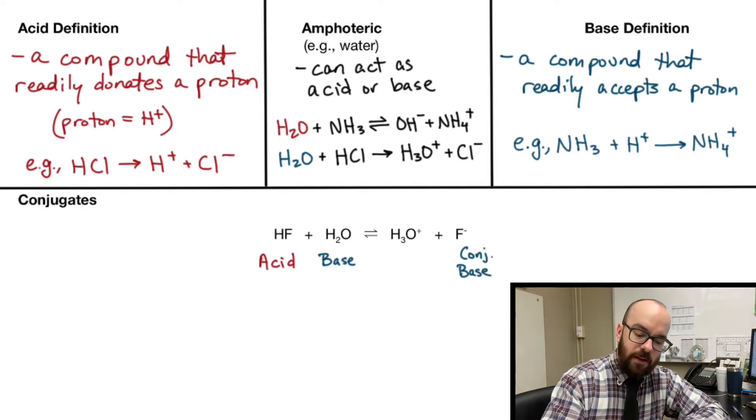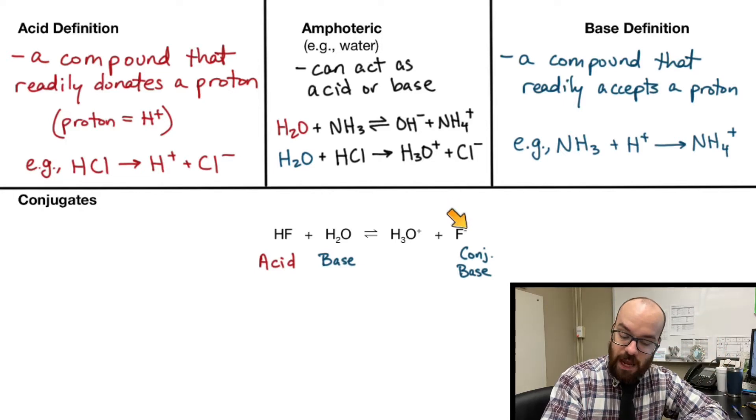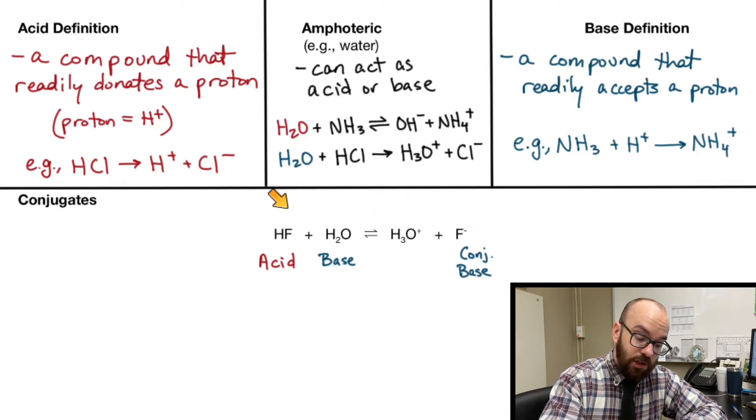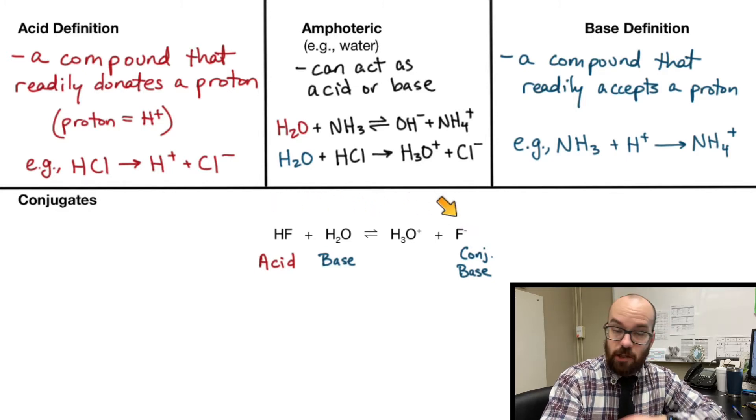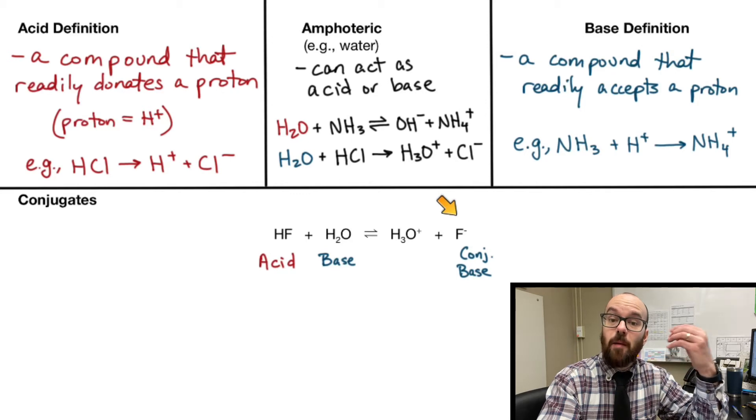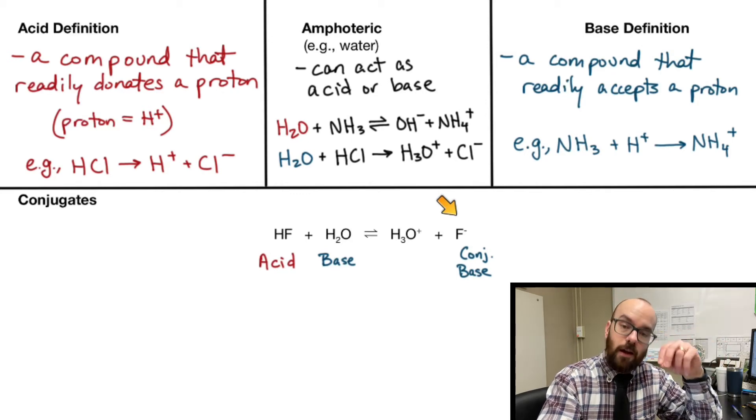The way that I think about this is if we went in reverse, this would have to accept a hydrogen in order to become HF again. So the F-, to go in reverse, would have to act as a base. Therefore, we call it a conjugate base.